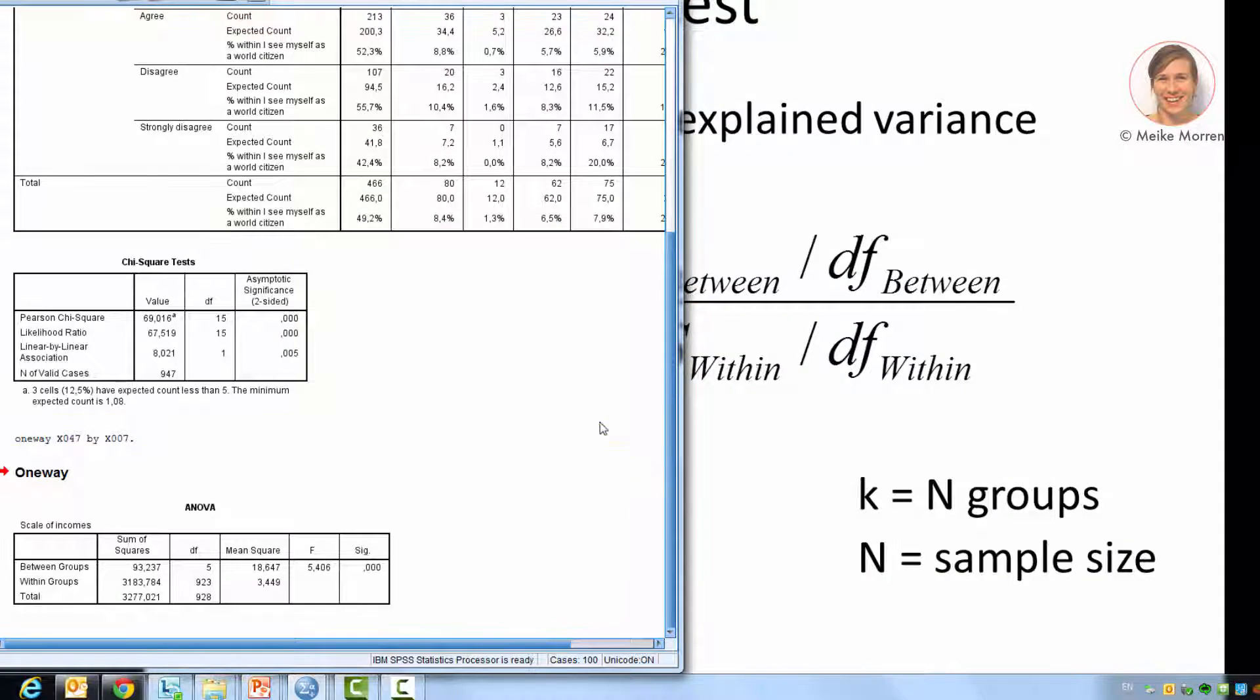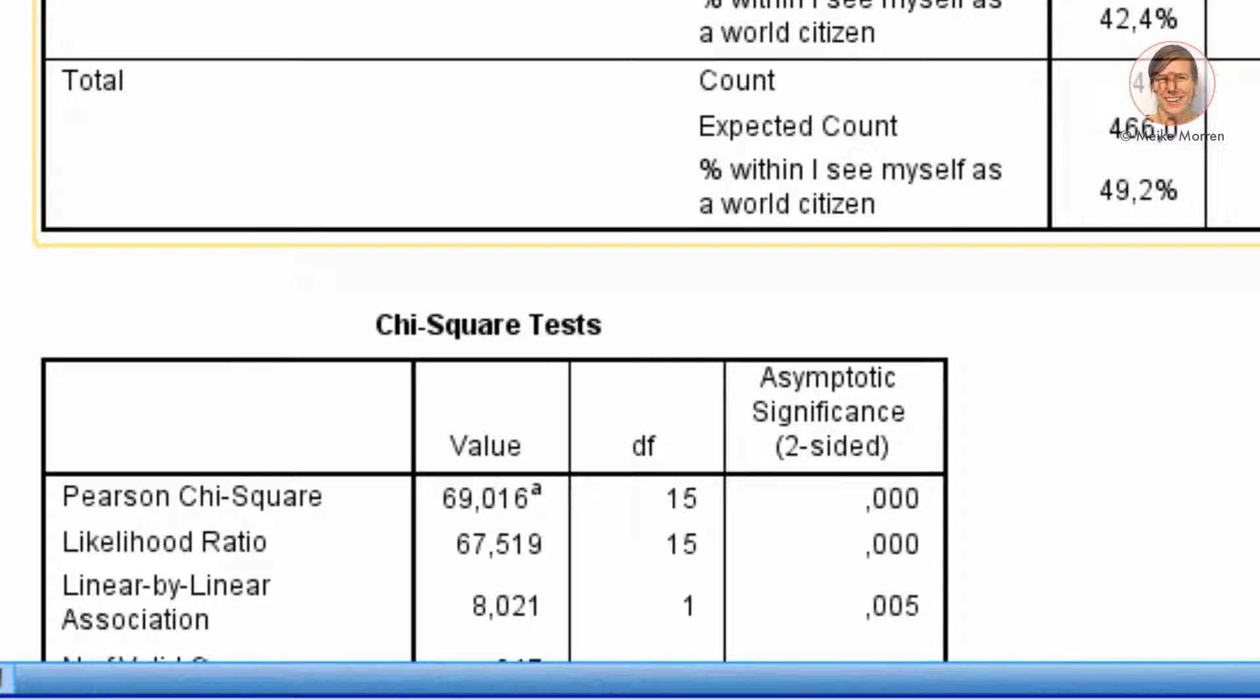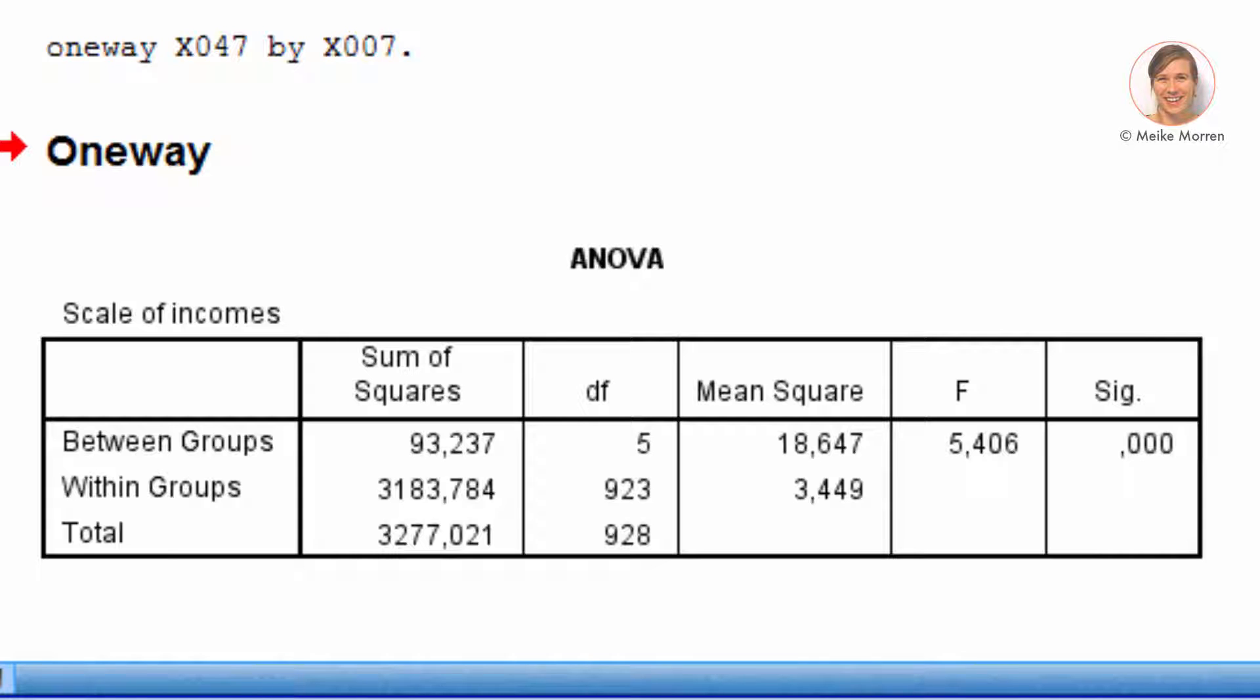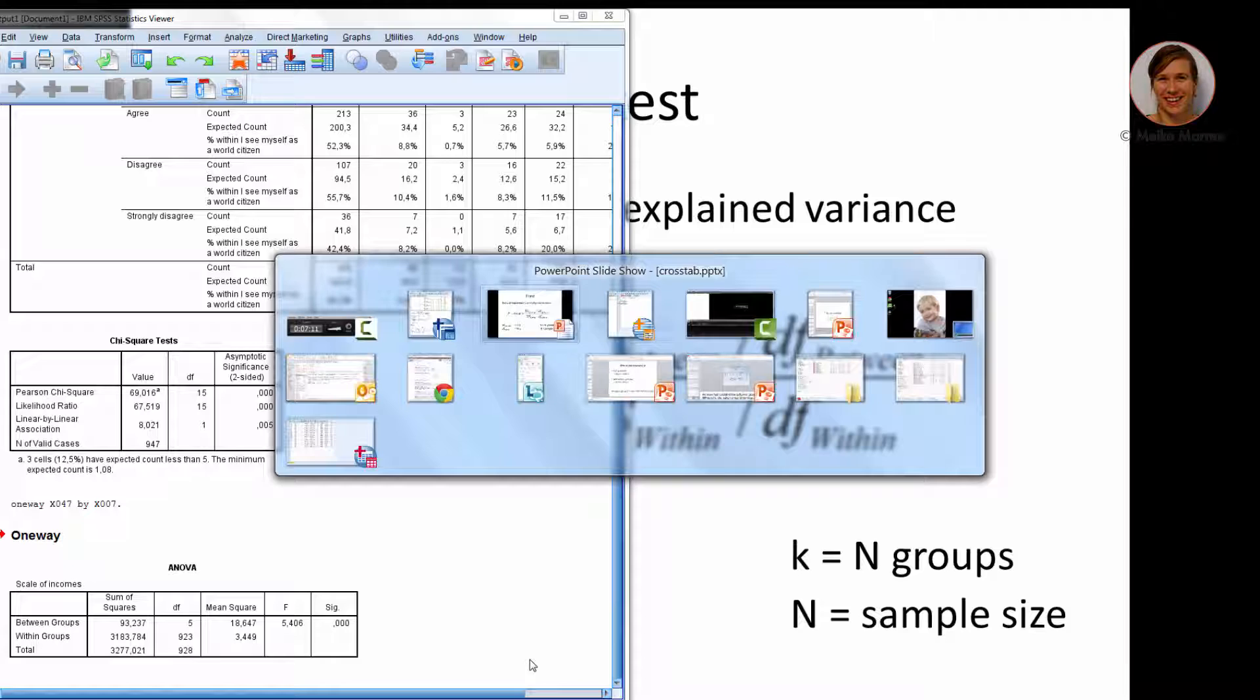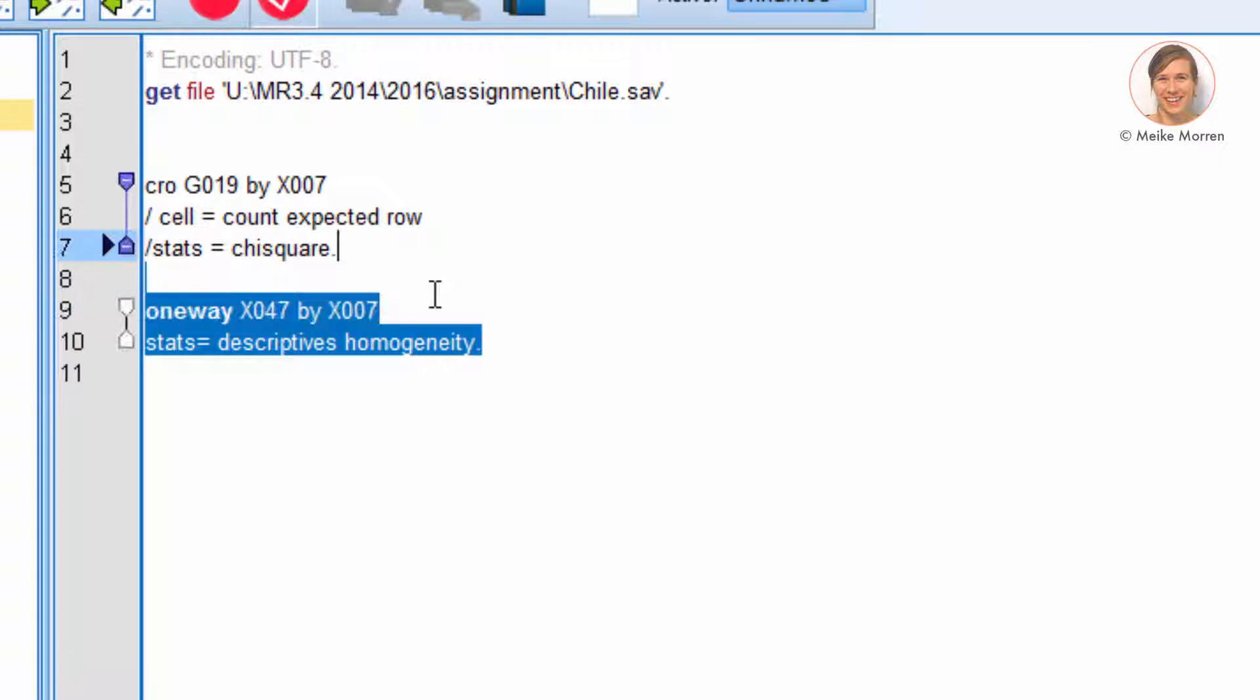Now, in our case, the F-value is 5. And similar to the chi-square value, it follows its own distribution, has its own table given the degrees of freedom. And according to this table, our F-value is significant. So if you want to know more about the F-value, I advise you to look at the statistics.